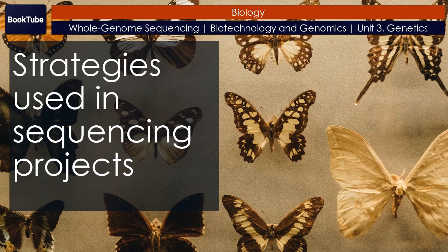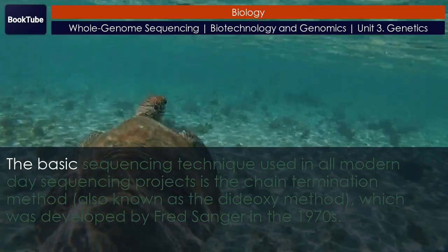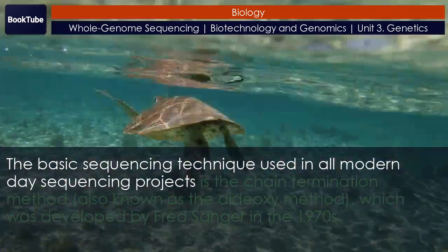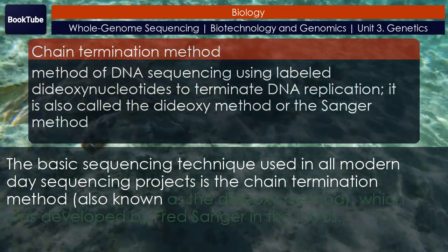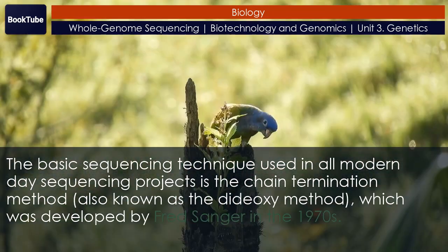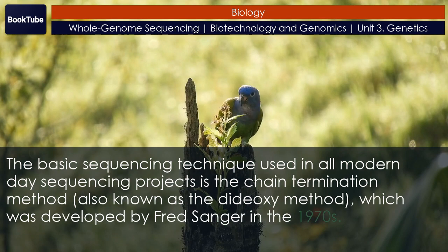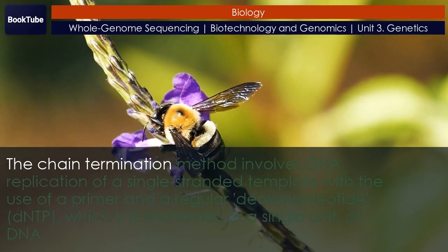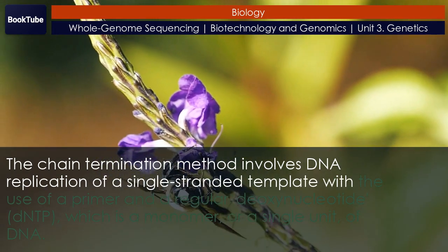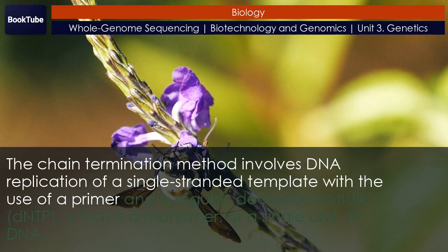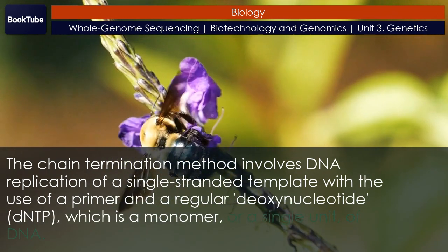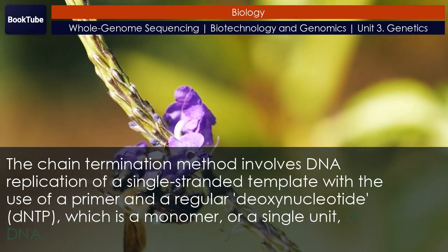Strategies used in sequencing projects. The basic sequencing technique used in all modern-day sequencing projects is the chain termination method, also known as the dideoxy method, which was developed by Fred Sanger in the 1970s. The chain termination method involves DNA replication of a single-stranded template with the use of a primer and a regular deoxynucleotide (dNTP), which is a monomer, or a single unit, of DNA.